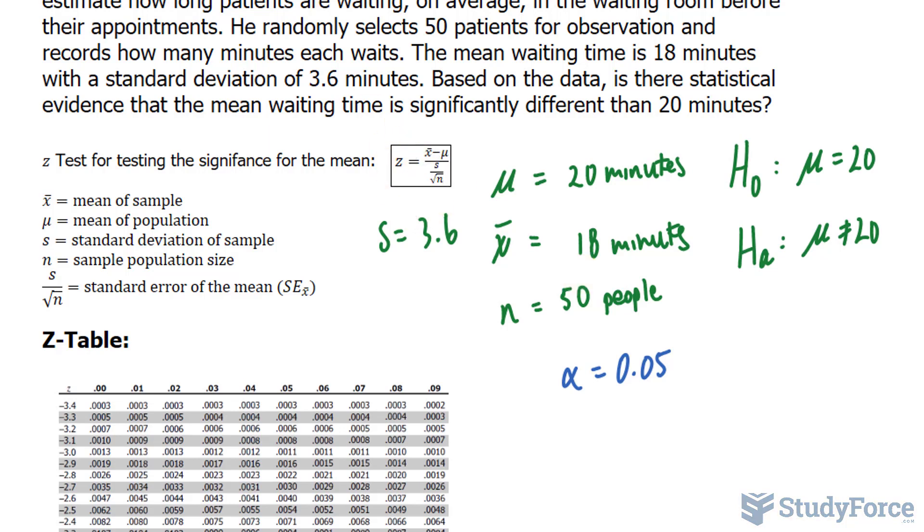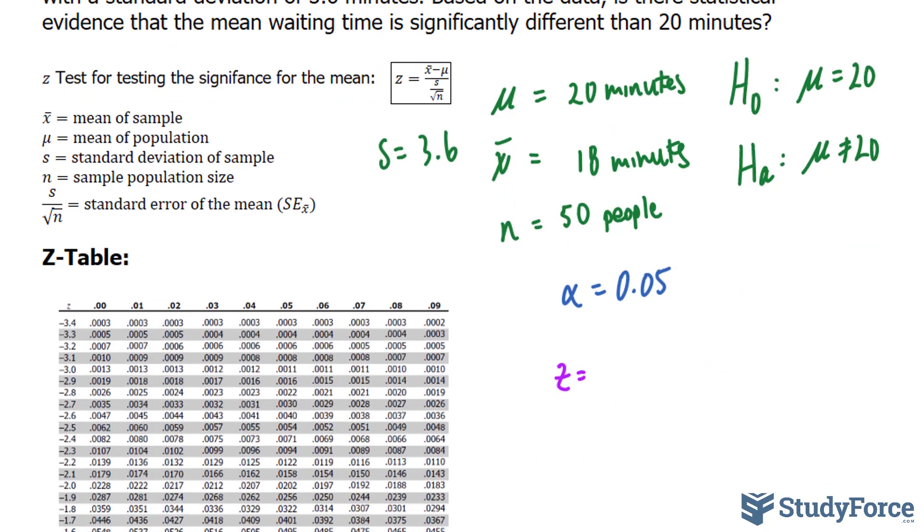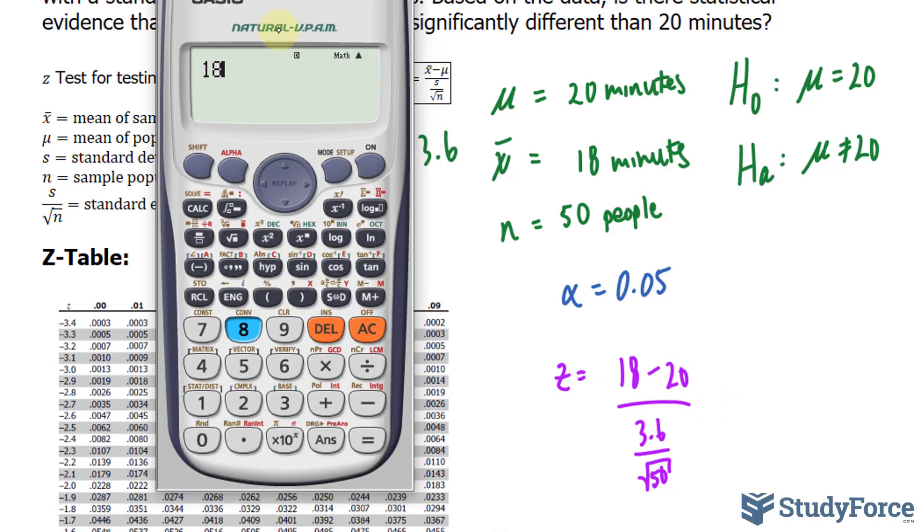So, using this formula right here, I'll write down Z is equal to the sample average of 18 minus 20 over s, which represents our standard deviation, over the square root of 50. Let's use our calculator. 18 subtract 20, divided by 3.6,